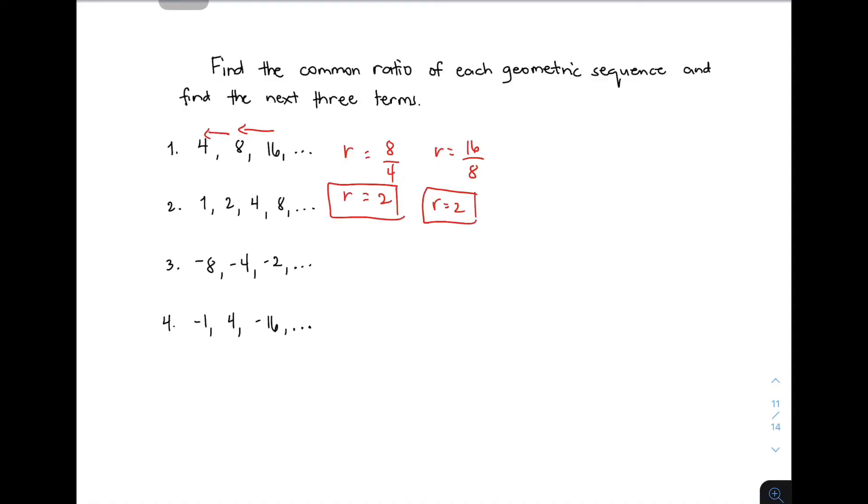Now that we know the common ratio for number 1, the next task is to find the next three terms. You have 4, 8, 16. Multiplying 16 by 2 gives 32. Multiplying the fourth term 32 by 2 gives 64. The sixth term is 64 times 2, which equals 128. These are the next three terms: 32, 64, 128.